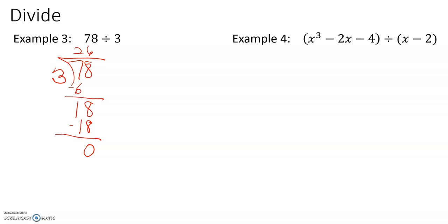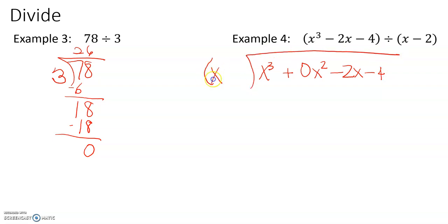Example 4: x cubed minus 2x minus 4 divided by x minus 2. This time we're dividing by x minus 2, which is a binomial — different from Examples 1 and 2 where we divided by a monomial. We're going to set up our long division. We don't have an x squared term, so we need to write plus 0x squared, giving us x cubed plus 0x squared minus 2x minus 4, divided by x minus 2.